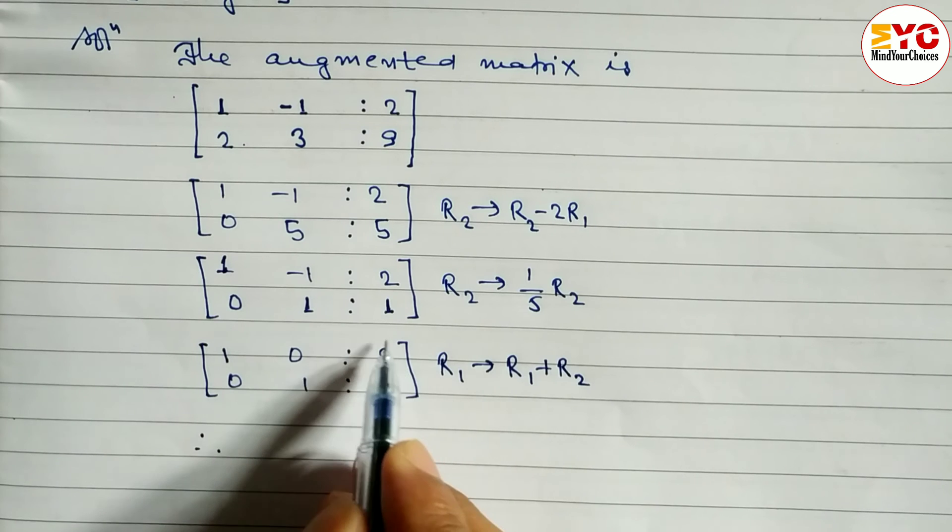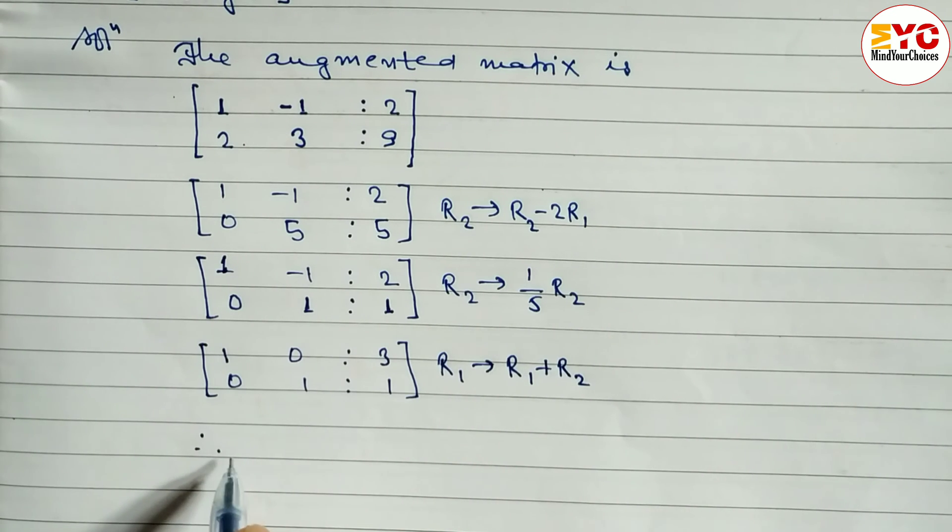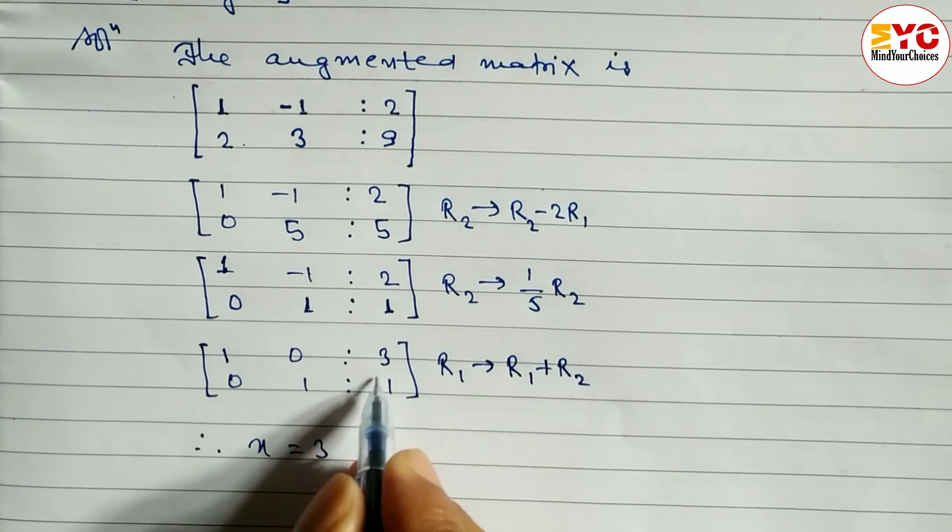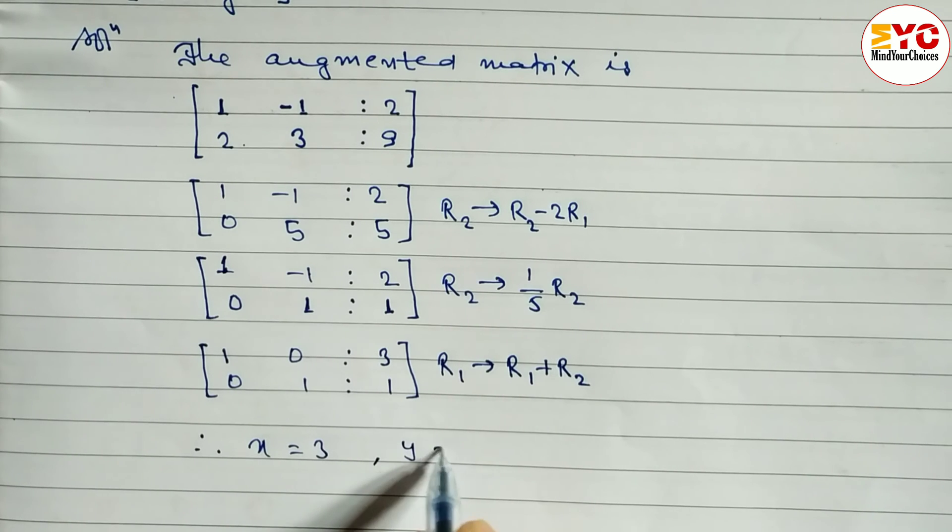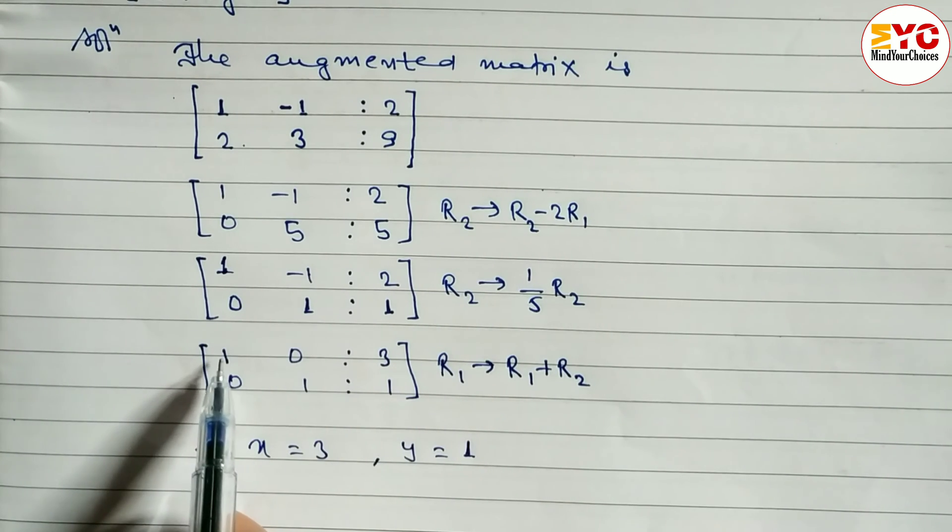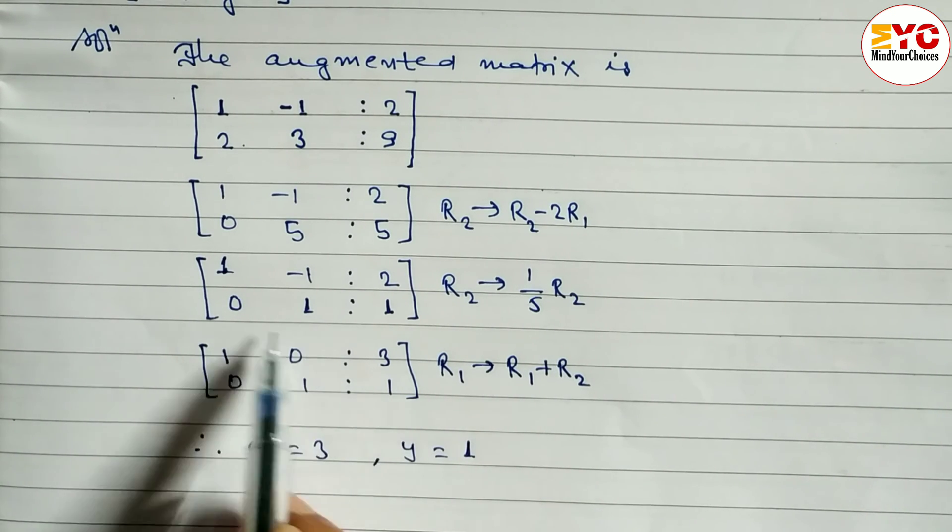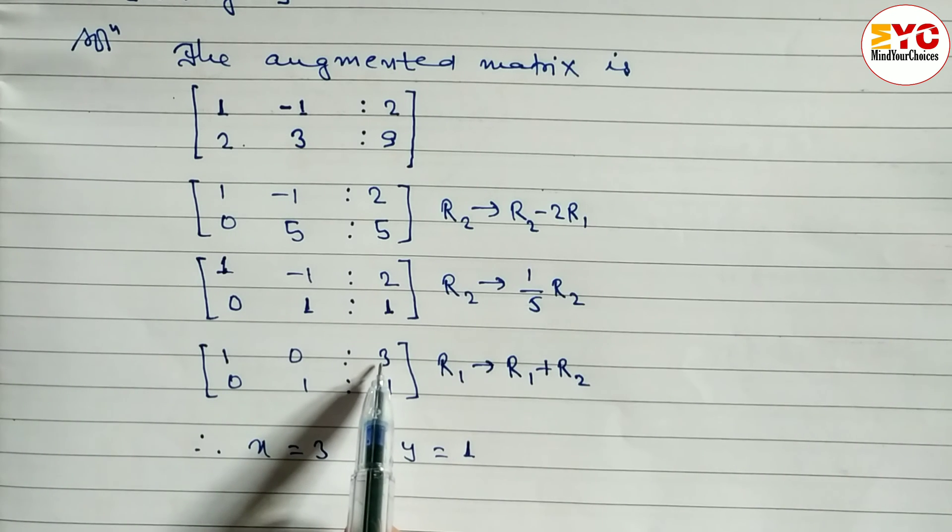So therefore what is the value of x? x is equal to 3. And y is equal to what is here? y is equal to 1. Always we have to convert in the form of 1, 0, 0, 1 in identity form. This one is value of x. And this one is value of y.